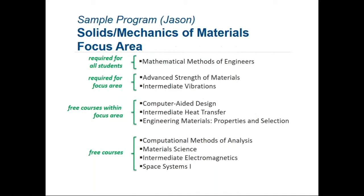Here's another sample program for the solids or mechanics of materials area. The sample program starts with the Math Methods course. The two required courses for this focus area are Advanced Strength of Materials and Intermediate Vibrations. Following that are focus area courses: Computer Aided Design, Intermediate Heat Transfer, and Engineering Materials. The four free technical electives in this case are Computational Methods of Analysis, which is an ME course; a Material Science course; Intermediate Electromagnetics, which is an ECE course; and a Space Systems course within the EP program.